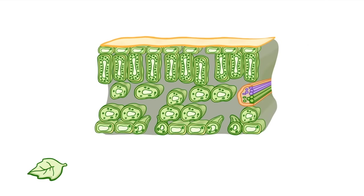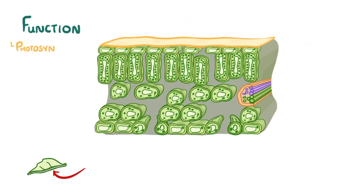This image here is a cross-section of a leaf, as though sliced from top to bottom and looking inside. Before we explore these structures, it's worth considering its function. Leaves are the site of photosynthesis, which we'll cover in another video, but basically it requires lots of carbon dioxide and water in order to make sugars.